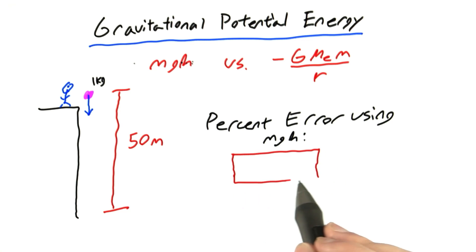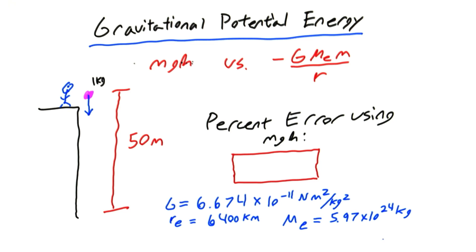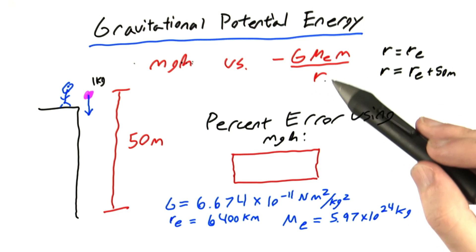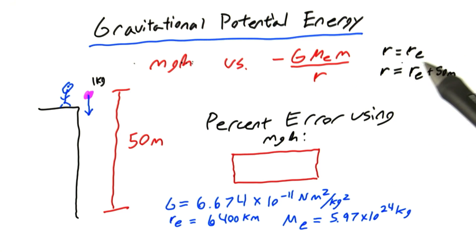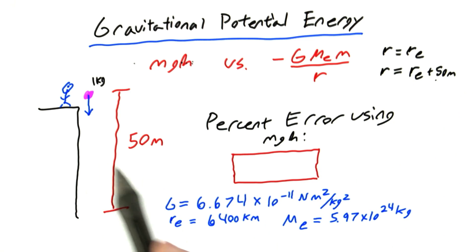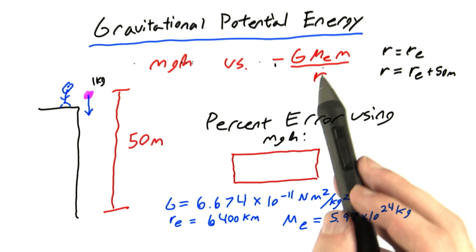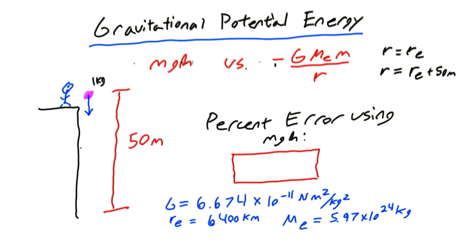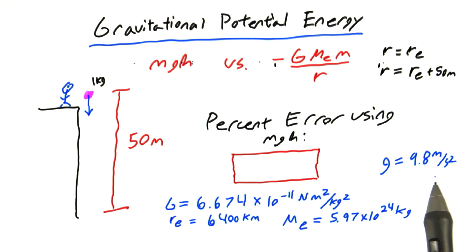You should put your answer in this box. In order to solve this problem, you may need a few constants: here's the value of g, here's the radius of the earth in kilometers, and here's the mass of the earth in kilograms. As a hint, when using the general formula, r should be the radius of the earth when the ball is at the bottom of the building, and should equal the radius of the earth plus 50 meters when the ball is at the top of the building, since this formula measures distance from the center of the earth. Also, be sure to use g equals 9.8 meters per second squared rather than 10, just to make our answer more accurate.